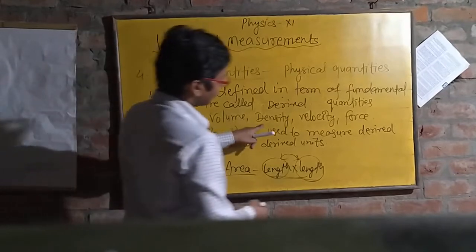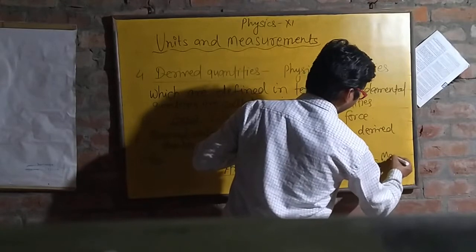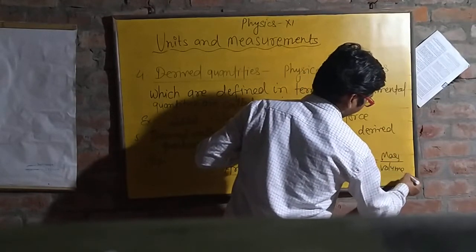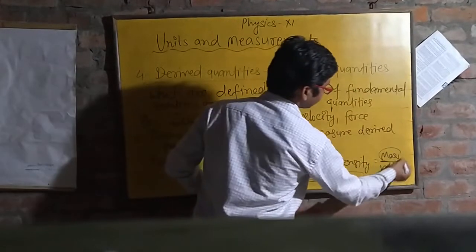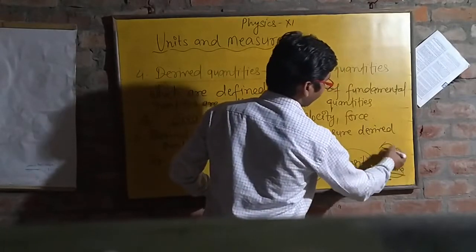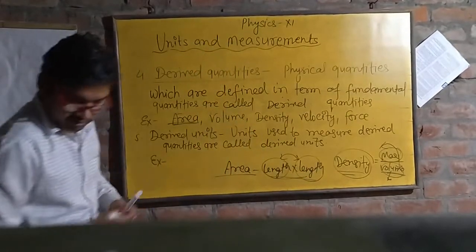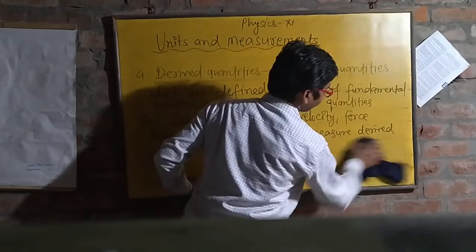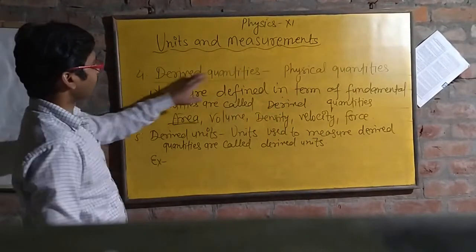Similarly, density is equal to mass upon volume. Volume is related to length, so density is related to fundamental quantities — mass and length. So these types of physical quantities which are defined from fundamental quantities are known as derived quantities.